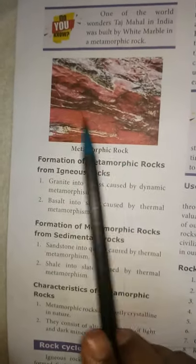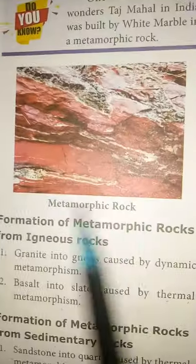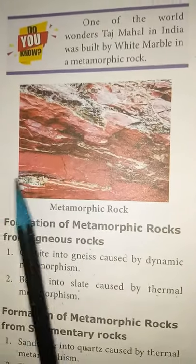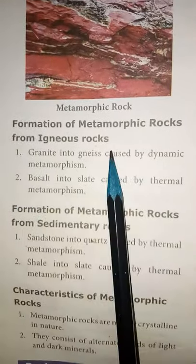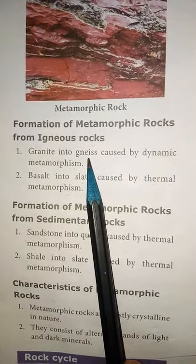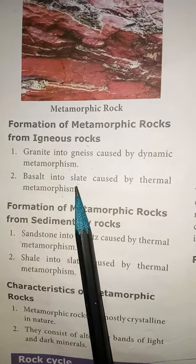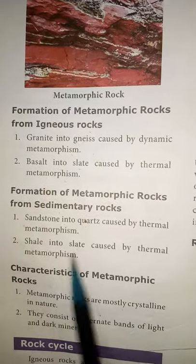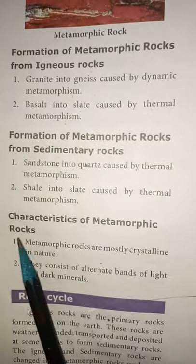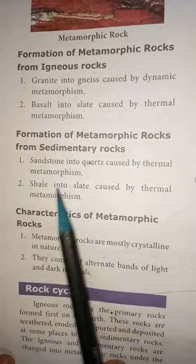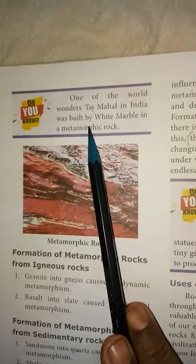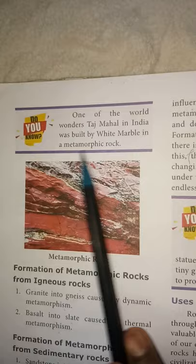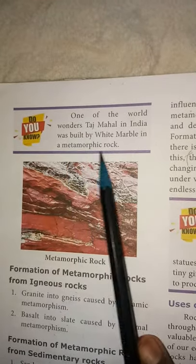Looking at metamorphic rocks: the original form is the parent rock — igneous and sedimentary rocks. Formation of metamorphic rocks from igneous rock: granite into gneiss and basalt into slate. Formation from sedimentary rock: sandstone into quartzite, shale into slate. One of the old wonders, the Taj Mahal in India, was built with white marble, which is a metamorphic rock.